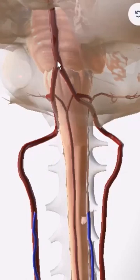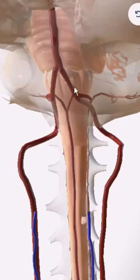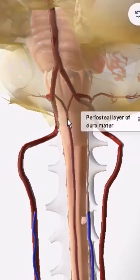The two vertebral arteries are converging in front of the brain stem, forming the basilar artery on the basilar groove of the pons. From these two vertebral arteries, you have three more branches. Number one is the anterior spinal artery, right in front.